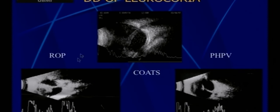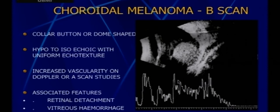Differential diagnosis of leukocoria on ultrasound: Coats disease shows a closed funnel RD with many subretinal echoes. ROP shows a closed funnel RD with echoes in the anterior vitreous. PHPV has the characteristic thick-at-disc membrane. In adults, choroidal melanoma has a classic dome-shaped or mushroom-shaped tumor with hypoechoic areas at the base (choroidal excavation). Uniquely, choroidal melanoma has uniform echogenicity despite being malignant — due to uniform tissue structure — producing a classic cascading A-scan pattern of decreasing reflectivity as you pass through the tumor.